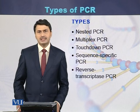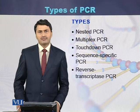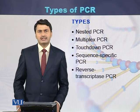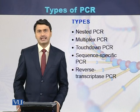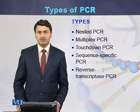Sometimes in multiplex PCR, the primers are fluorescently labelled. In such cases, if the amplicons are of overlapping size, they can be identified due to the fluorescence.